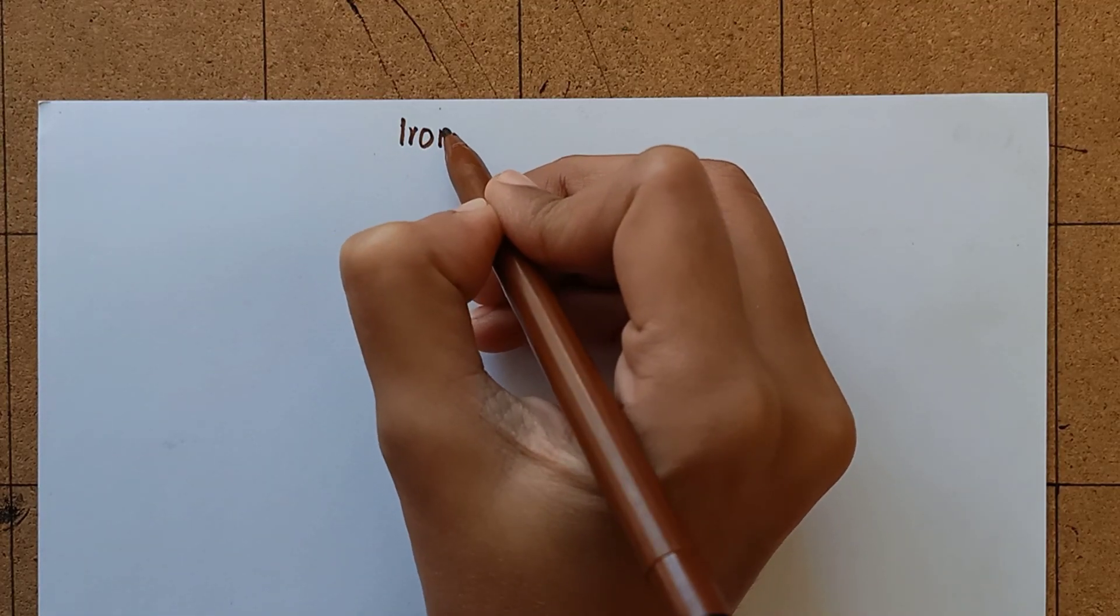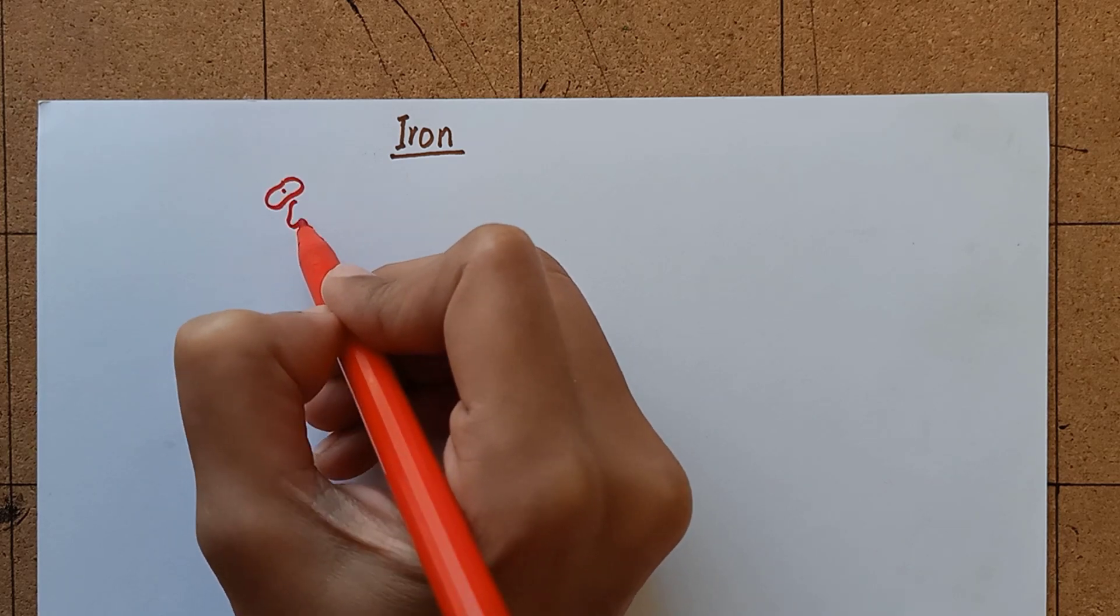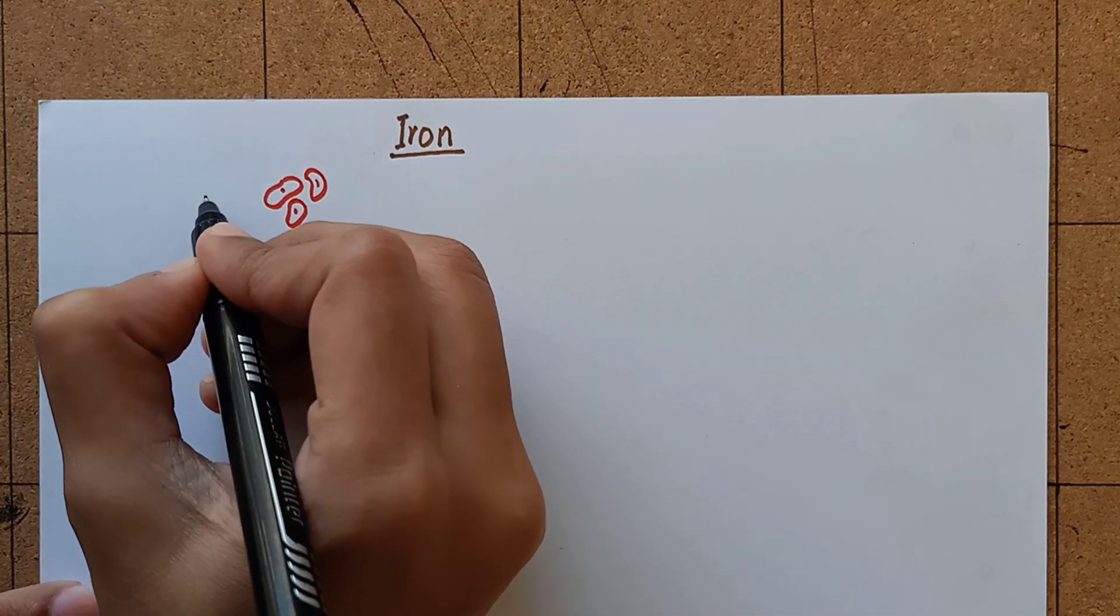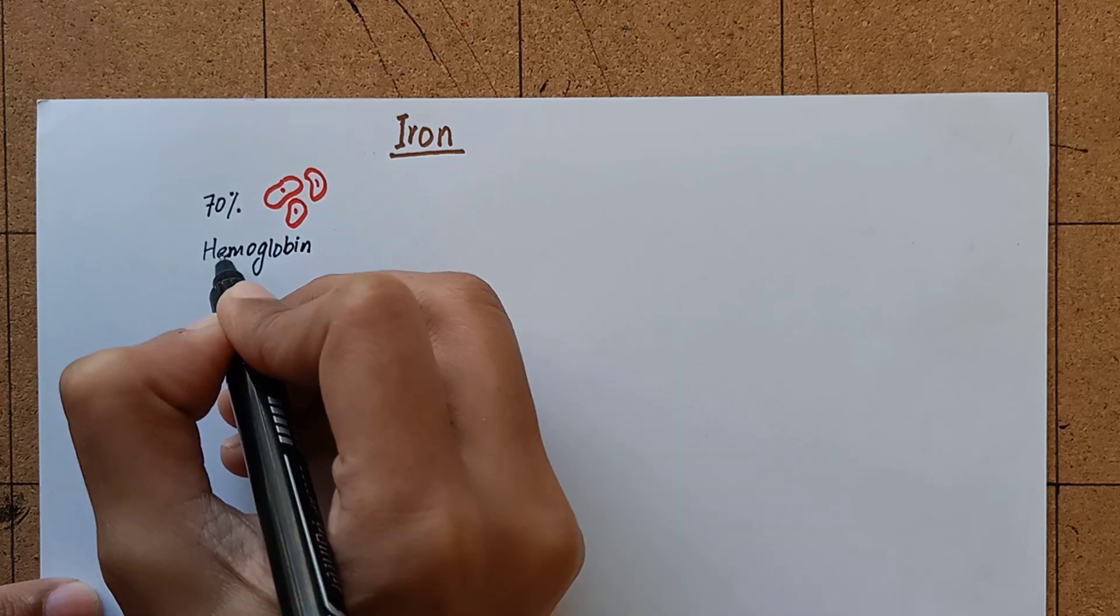In the biochemistry of minerals, we are going to learn about iron. About 70% of the total body content of iron occurs in erythrocytes of blood as a constituent of hemoglobin.